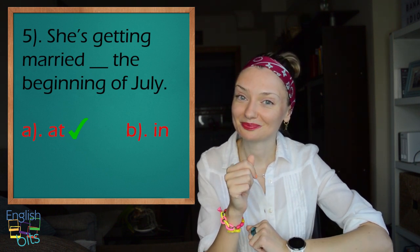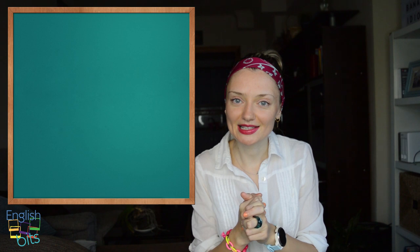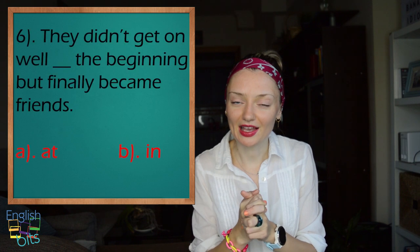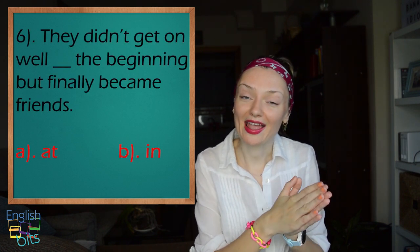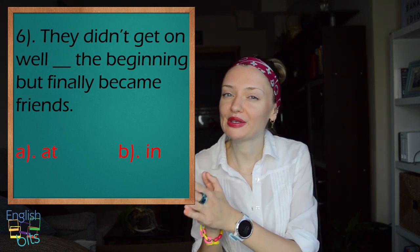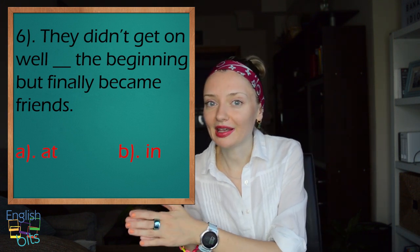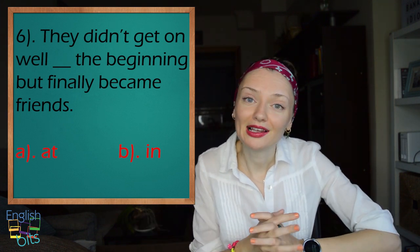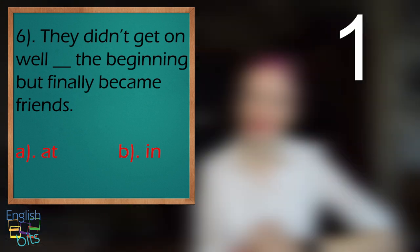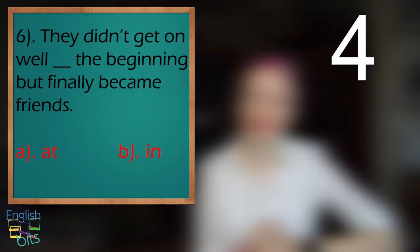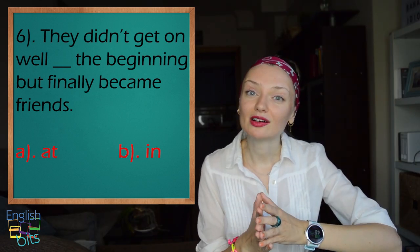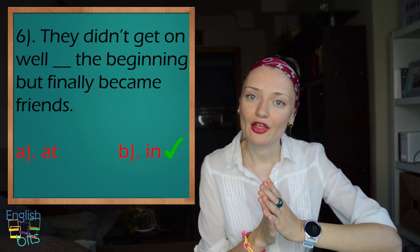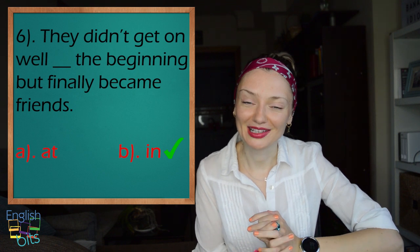Our last sentence: 'They didn't get on well — A) at the beginning, or B) in the beginning — but finally became friends.' The correct answer is: 'They didn't get on well in the beginning.' Was it correct?